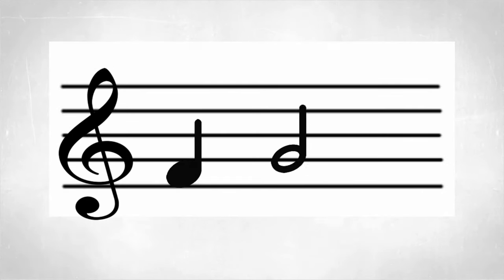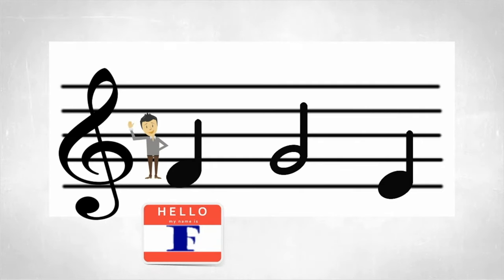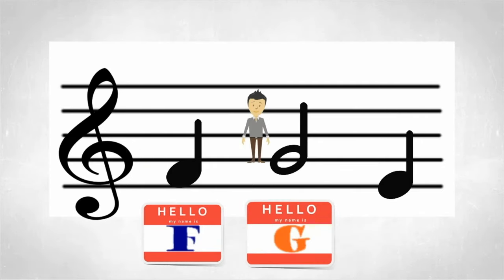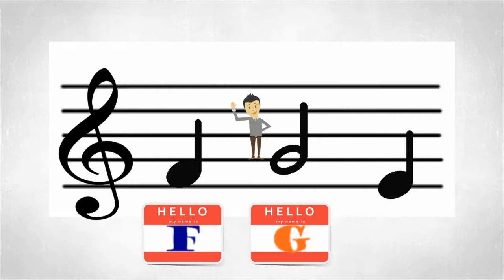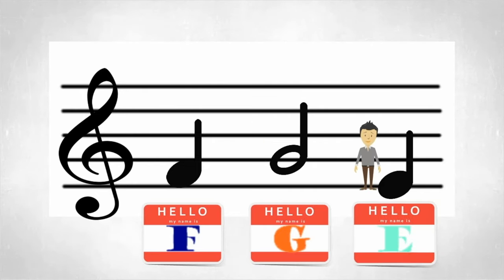Music notes love to hang out on the staff, and when they do, they each get a different letter from the musical alphabet, kind of like a name tag. Since the treble clef is in charge, the first name is an F. The next note is G, and the last note is E.